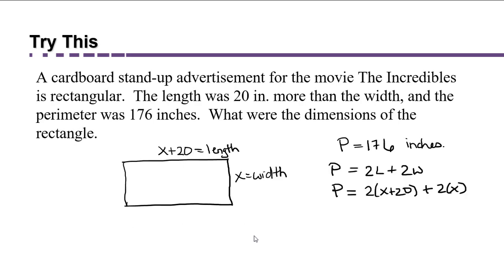In this case, the length is x plus 20, and the width is x. But we also know that the perimeter is 176. So we know that 176 equals 2 times (x plus 20) plus 2x. Now we have an equation with only one unknown in it, only one variable, and we're going to solve it.